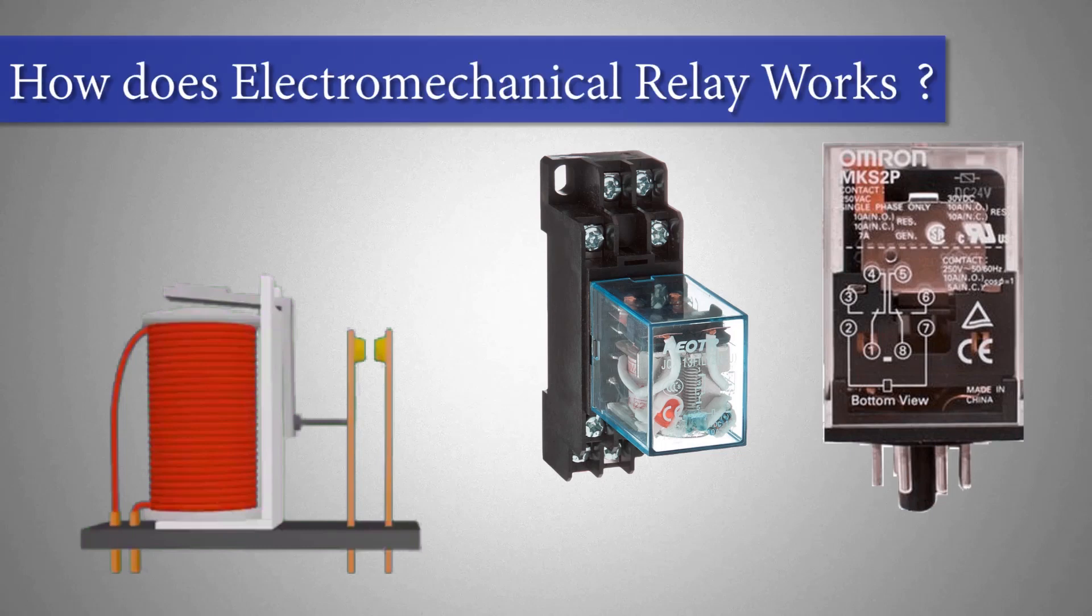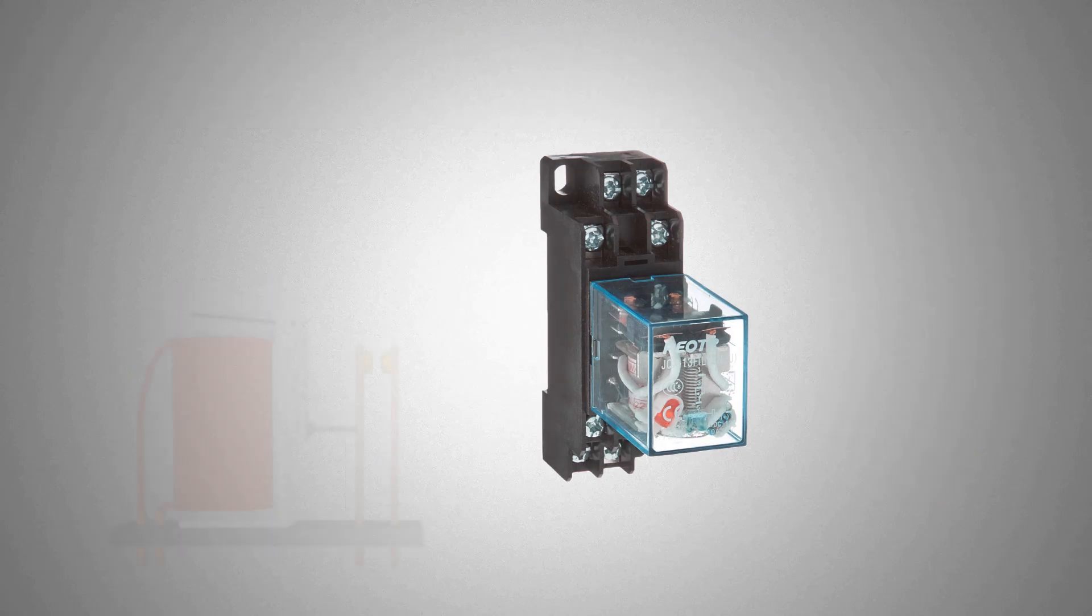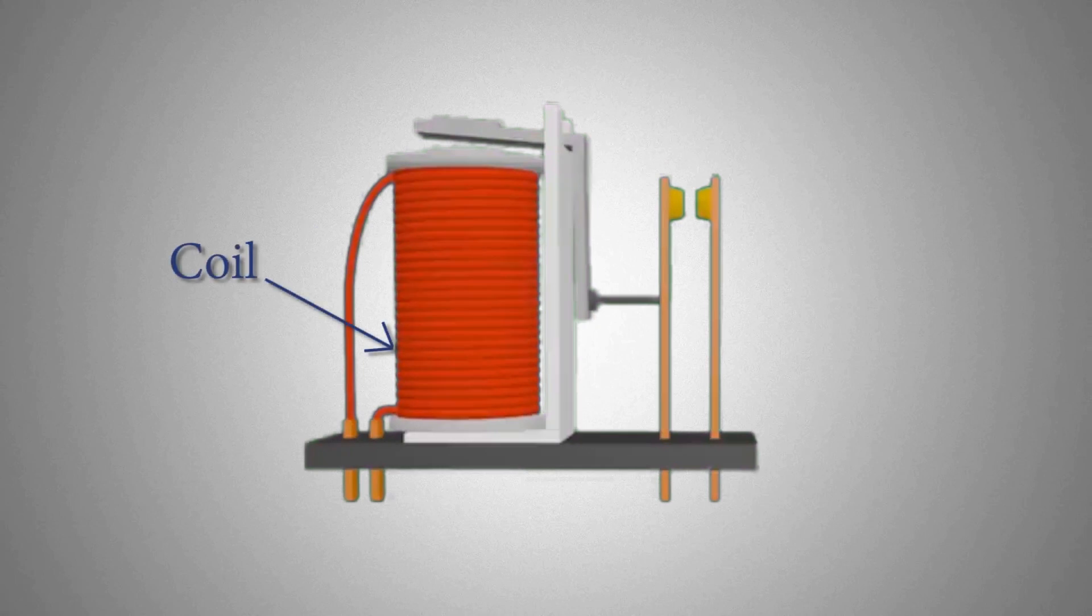What is an electromechanical relay? The main components of the relay are coil, armature, and normal open or close contacts.